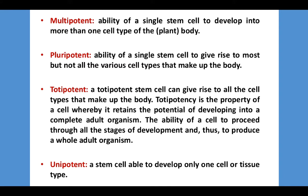Totipotent stem cells can give rise to all the cell types that make up the body. Totipotency is the property of a cell whereby it retains the potential of developing into a complete adult organism — the ability of a cell to proceed through all the stages of development and thus produce a whole adult organism. And the last, unipotent: a stem cell able to develop into only one cell or tissue type.